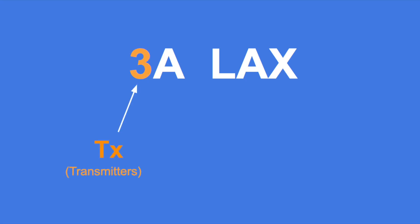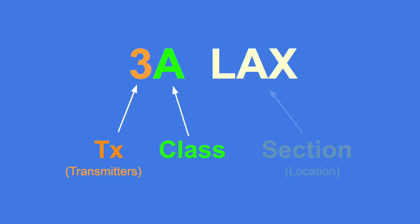Let's first understand how a class and section looks like. The class is built from a number and a letter. The number is the maximum number of transmitters that will operate simultaneously with the same callsign. The letter determines the class. The section refers to your location.